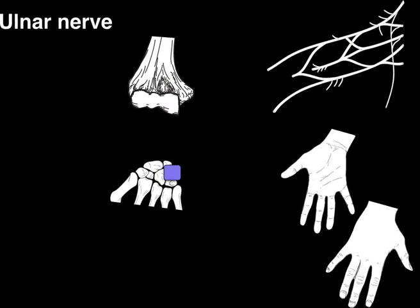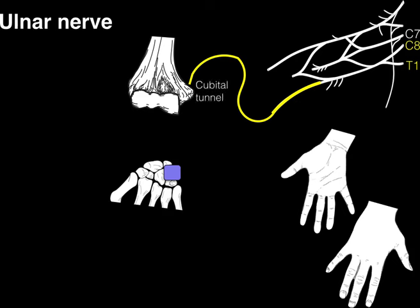The ulnar nerve primarily receives its contributions from C8 and T1, with some contributions from C7 as well. Similar to the median nerve, the ulnar nerve courses through the axilla and down the arm without giving off branches. It then reaches the distal humerus, where it courses behind the medial epicondyle through a structure called the cubital tunnel, and then enters the forearm.